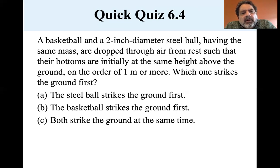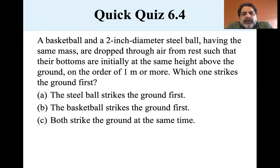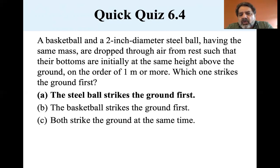Consider a basketball and a two-inch diameter steel ball of equal mass, dropped from rest at the same height. They have the same mass but different cross-sectional areas. The steel ball has a smaller cross-sectional area, so it has less resistance, and therefore the steel ball strikes the ground first. That concludes this section and the chapter.